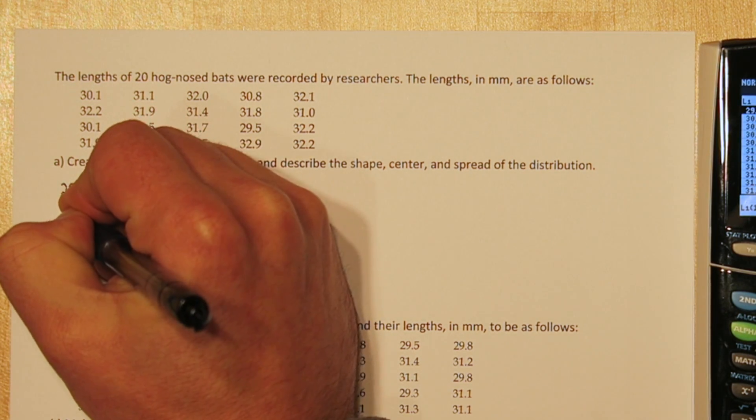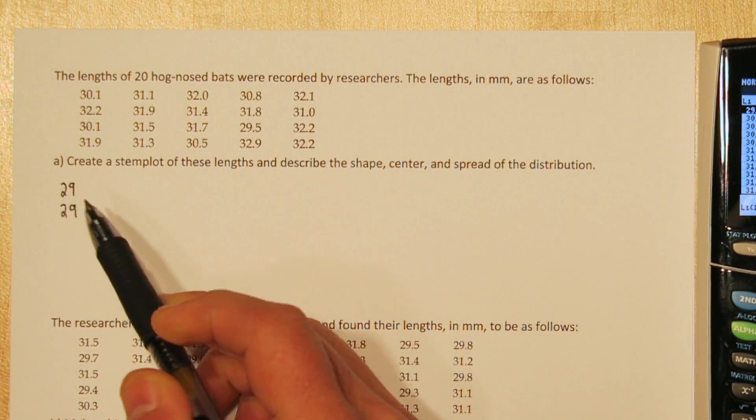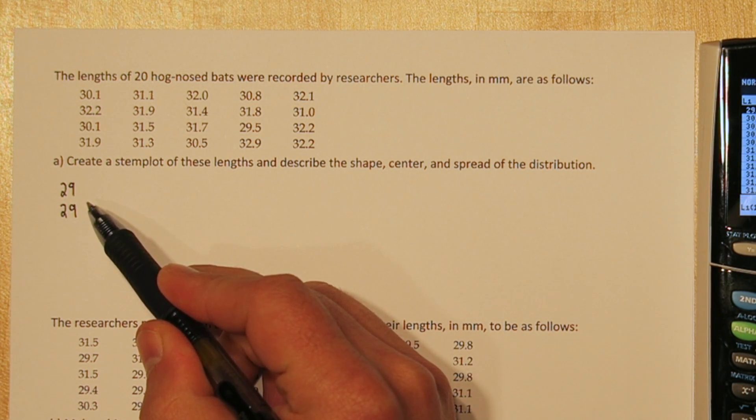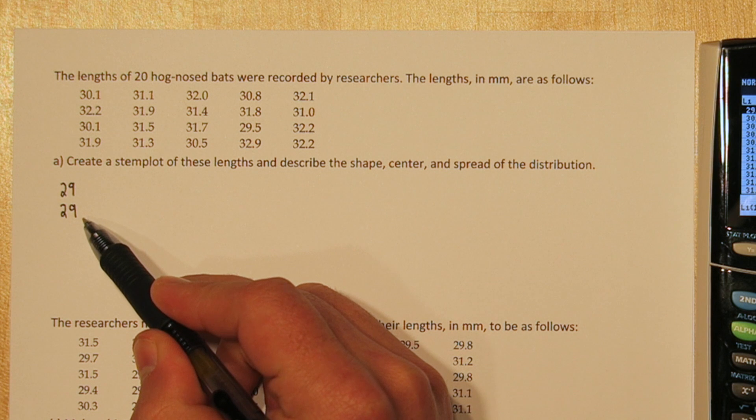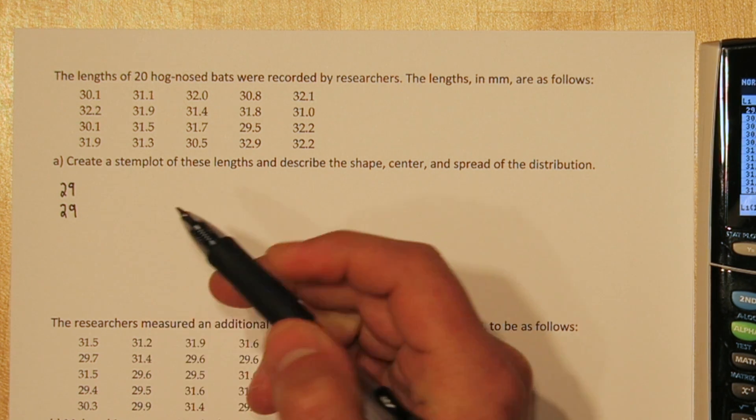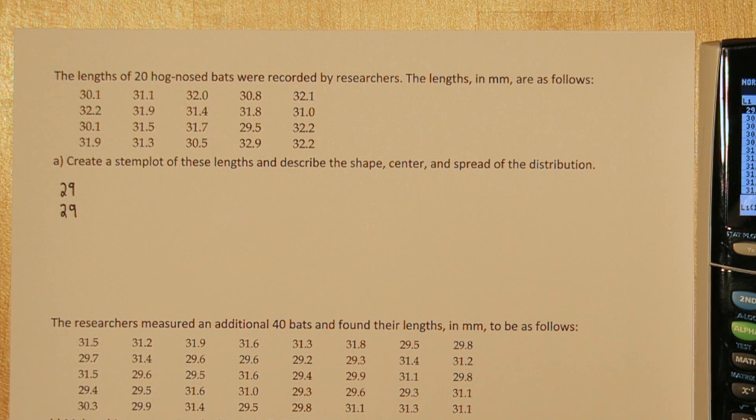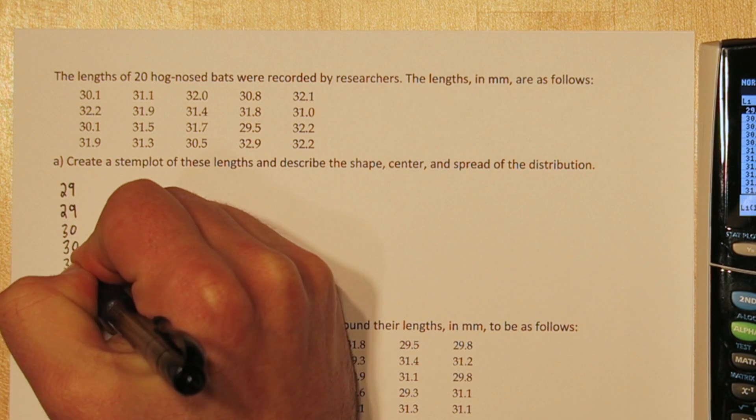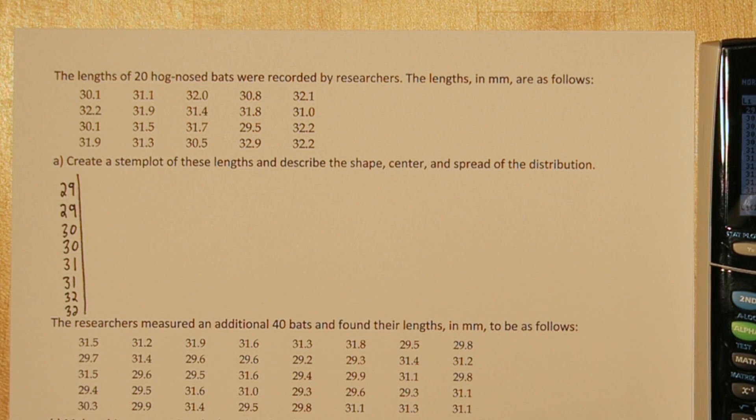Let's start by writing 29 twice. Now the first 29 is going to be for values from 29.0 to 29.4, and the second stem is going to be values from 29.5 all the way to 29.9. That gives us more stems and doesn't condense the data as much. So here's all our stems.